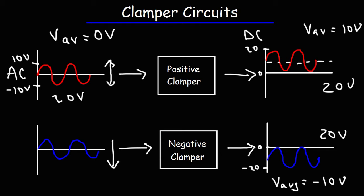A positive clamper circuit raises the waveform above a reference voltage and increases the average voltage, whereas a negative clamper circuit shifts the waveform below a reference voltage and decreases the average voltage.